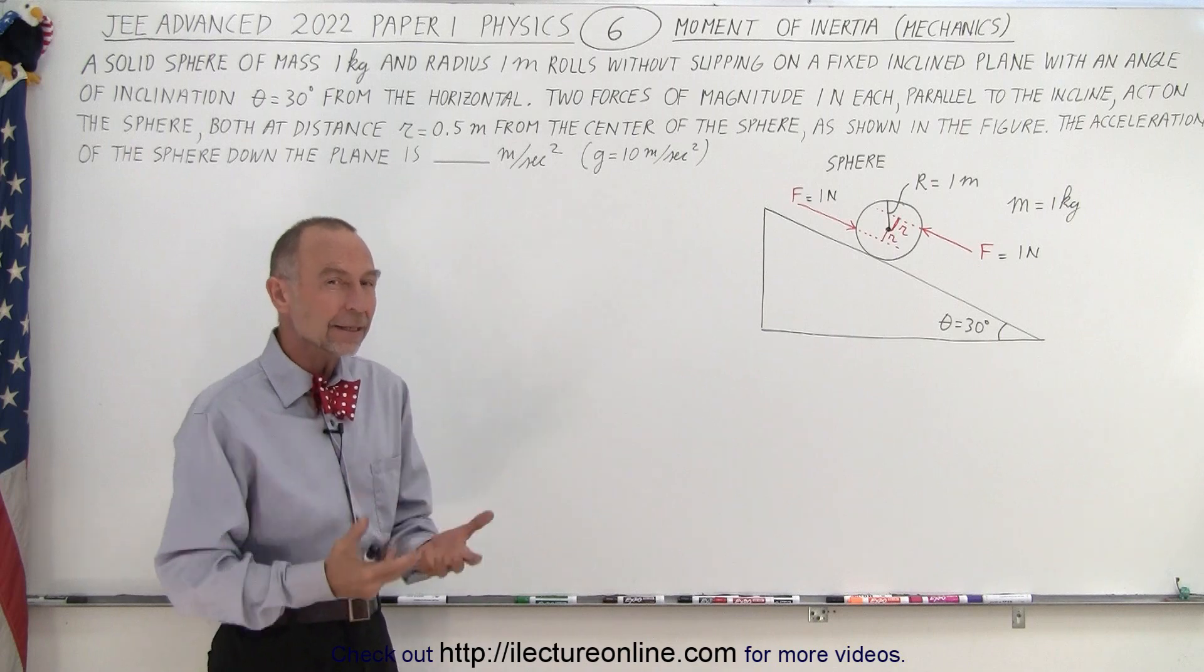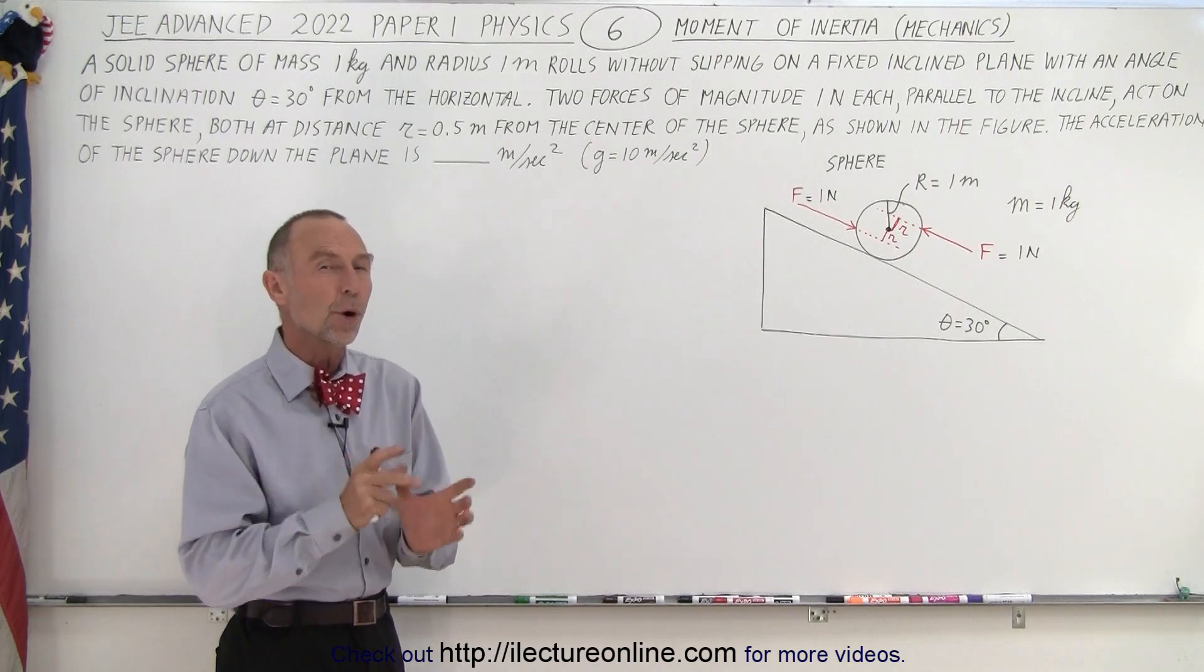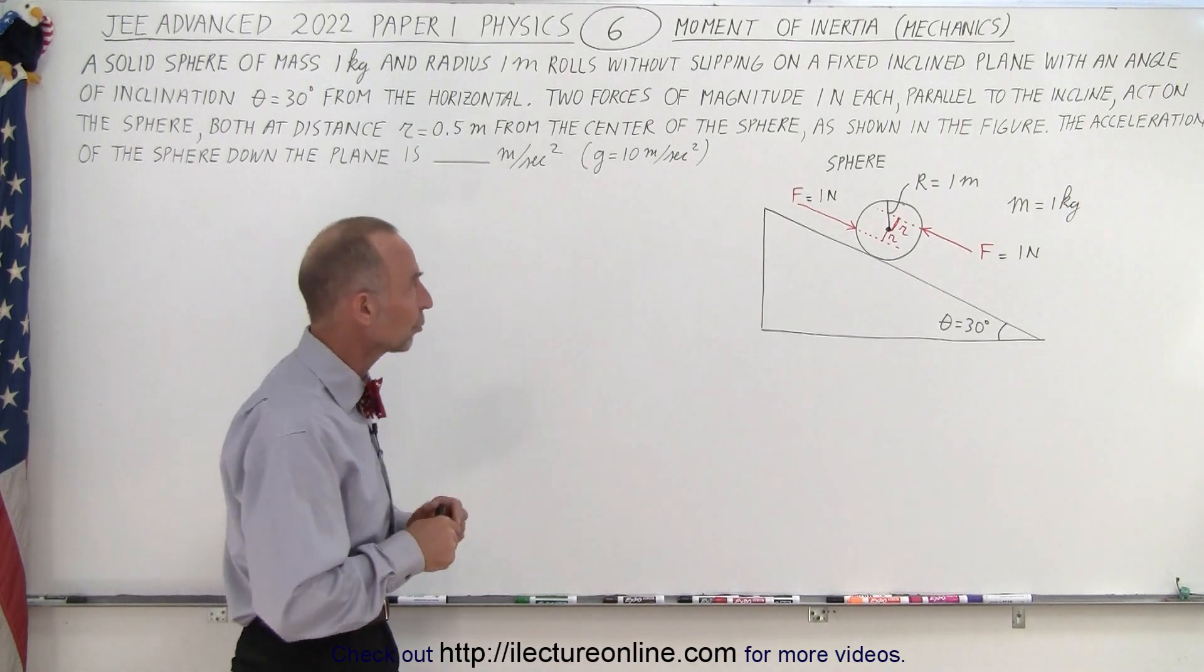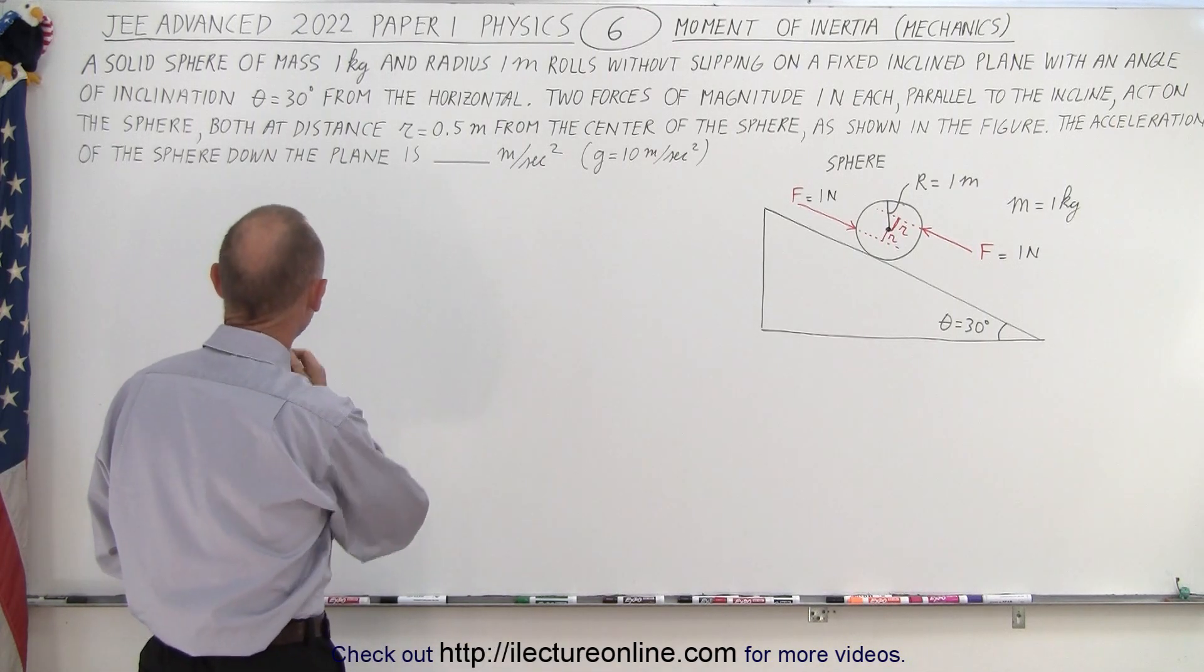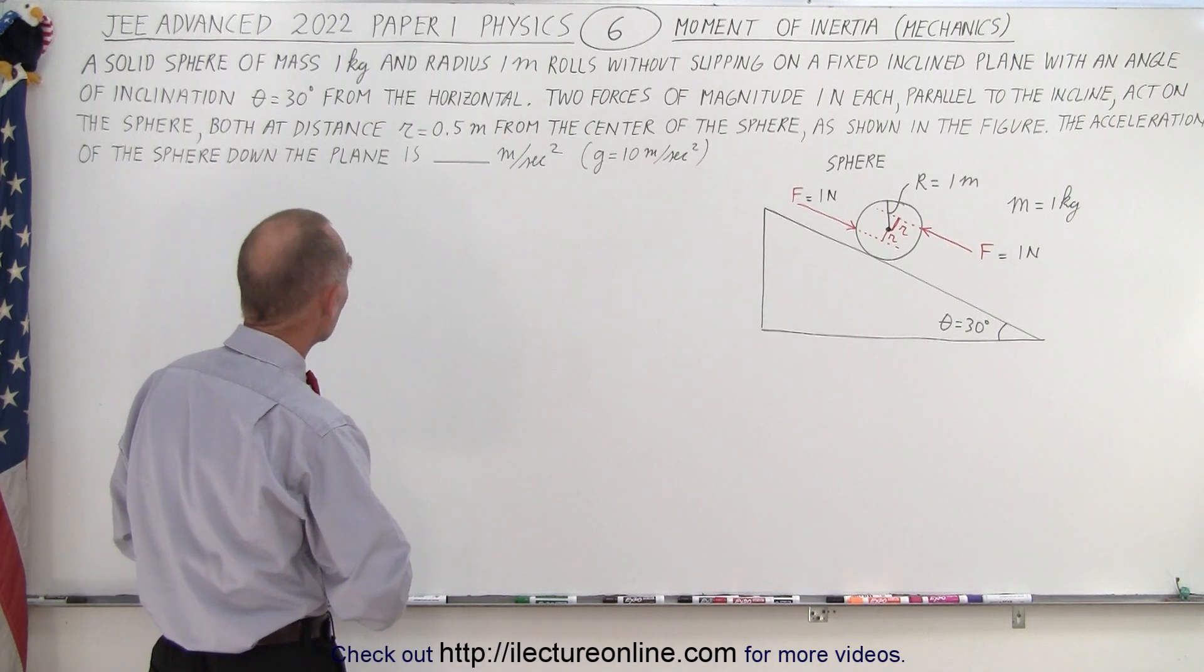We have an object rolling down an incline and the object has moment of inertia. Let's read the problem and then we'll get to the solution. A solid sphere of mass 1 kg and radius 1 m